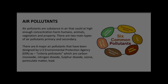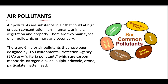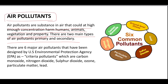Air pollutants are substances in air that at high concentration can harm humans, animals, vegetation, and property. There are two main types of air pollutants: primary and secondary. These substances, which affect and harm humans, animal life, vegetation, crops, agriculture, and property, are called air pollutants.